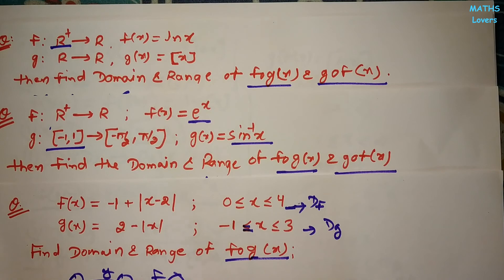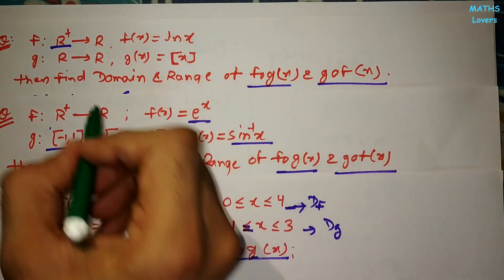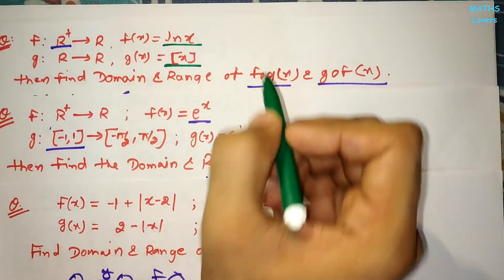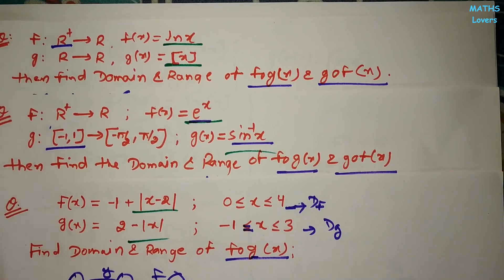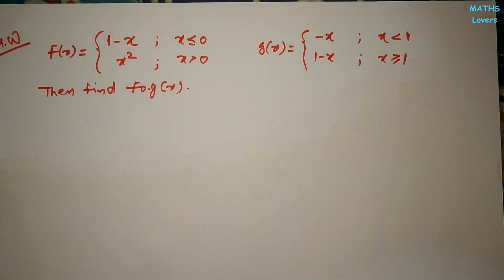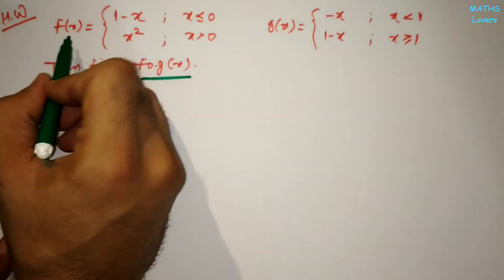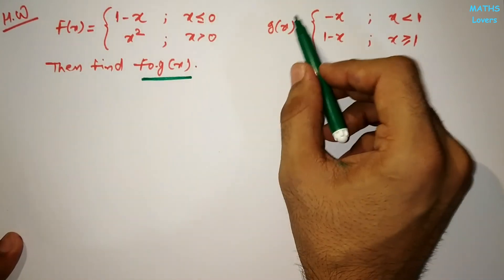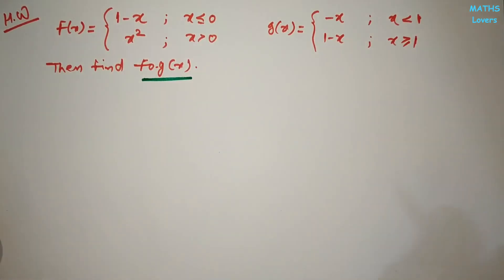All the problems we solved today involved single-definition functions because each function had a single definition. As homework, there is a problem involving multiple-definition (piecewise) functions — f(x) and g(x) each have two definitions. Try it yourself, and in the next video we will see how to solve this type of problem. Thank you.